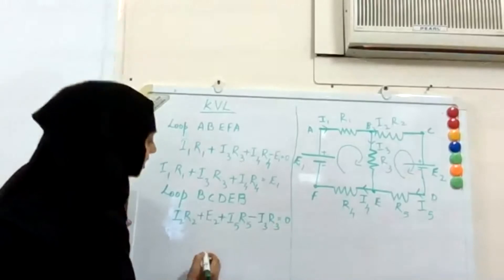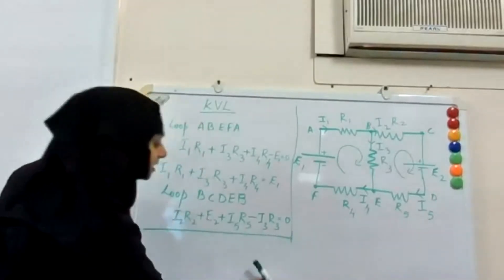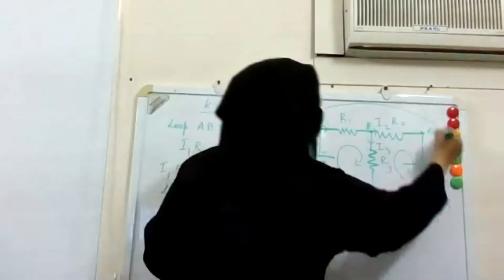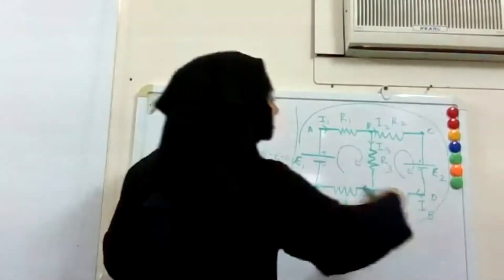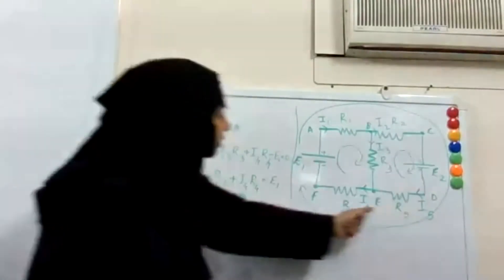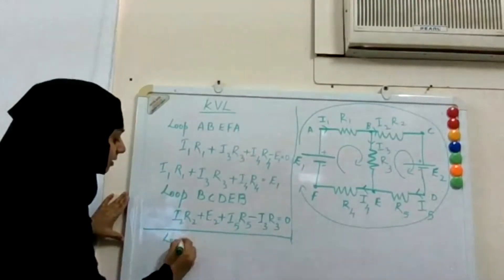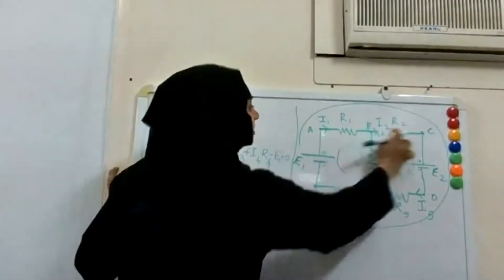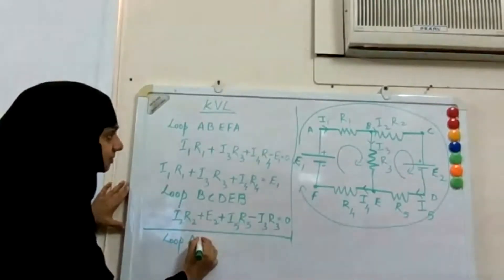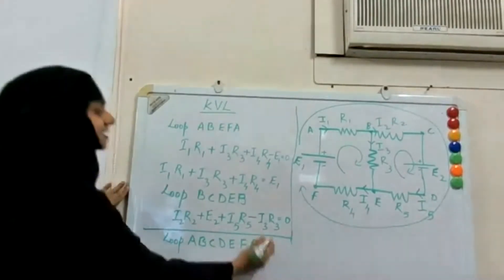Now let me consider one more loop — the outer loop. Mohamed Jaman, can you name it? The loop is A, B, C, D, E, F, A — the big loop.